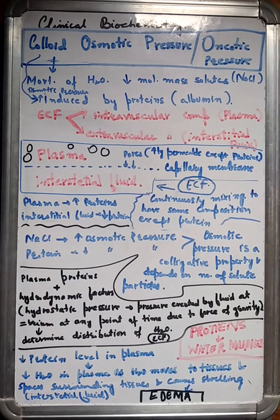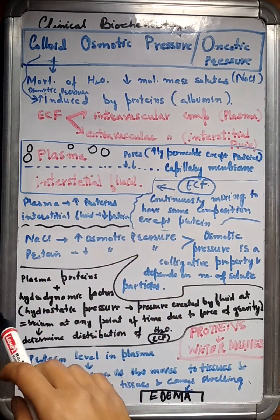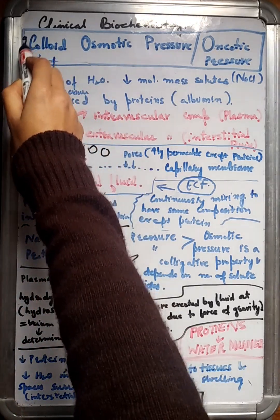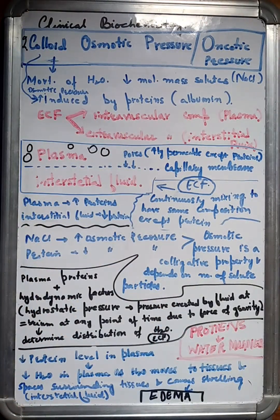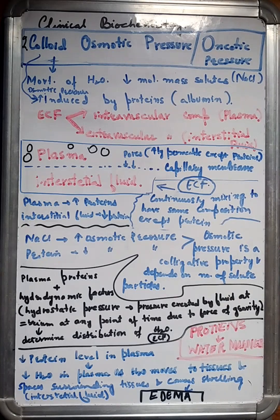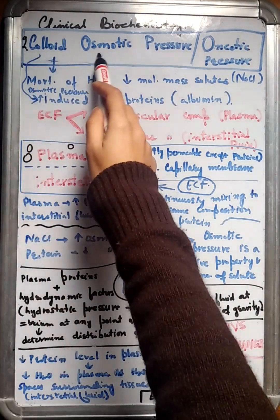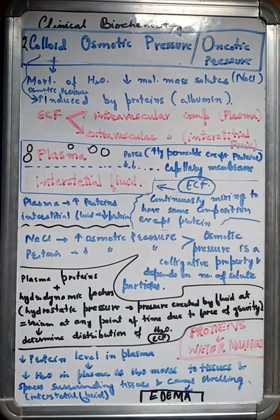Hey everyone, welcome to HNS the Glee. Today we are going to talk about the second factor that affects the movement of water across the compartments, and that's the colloid osmotic pressure, also known as the oncotic pressure.